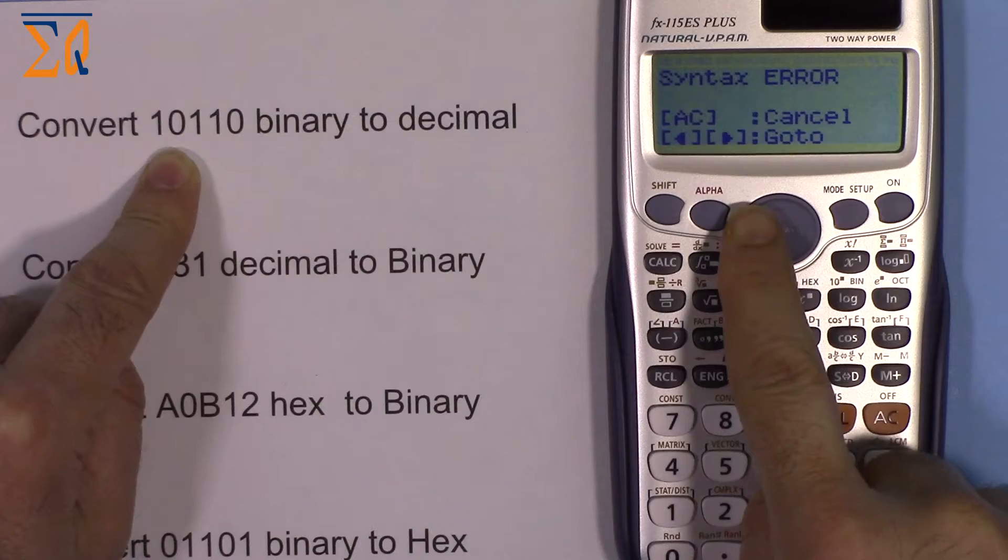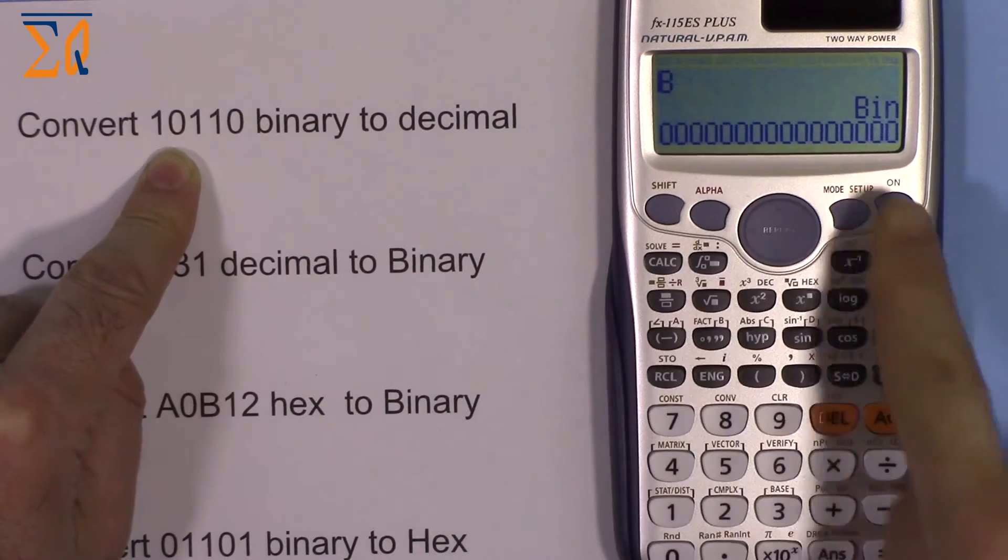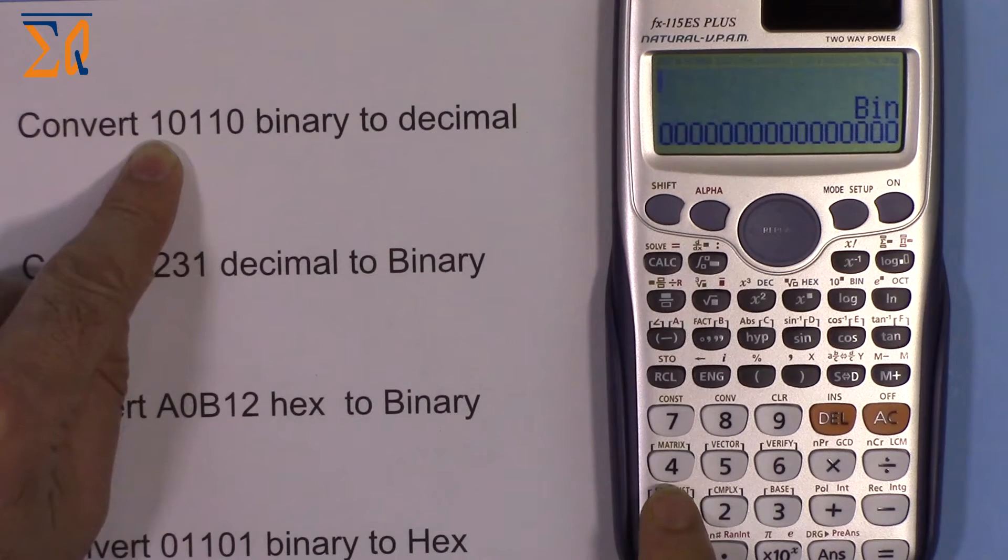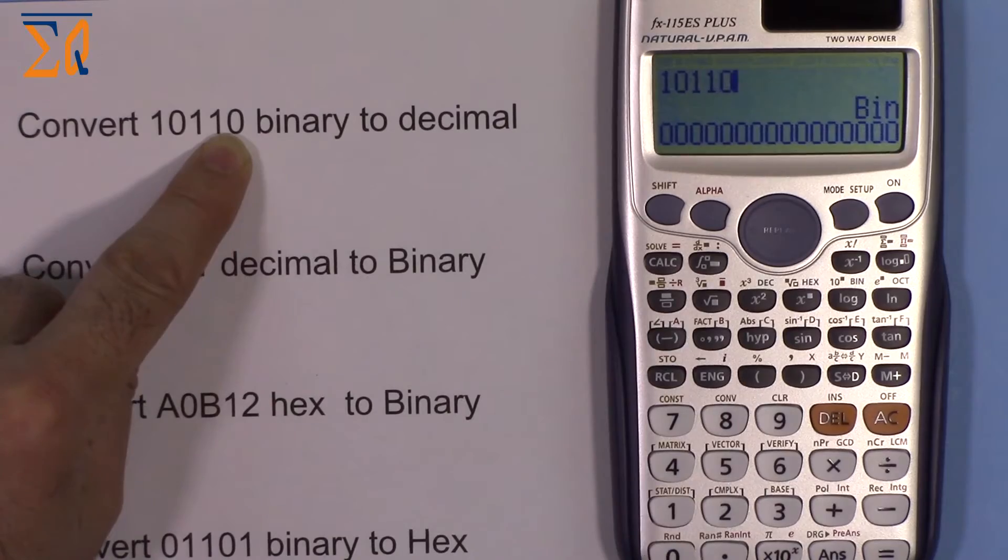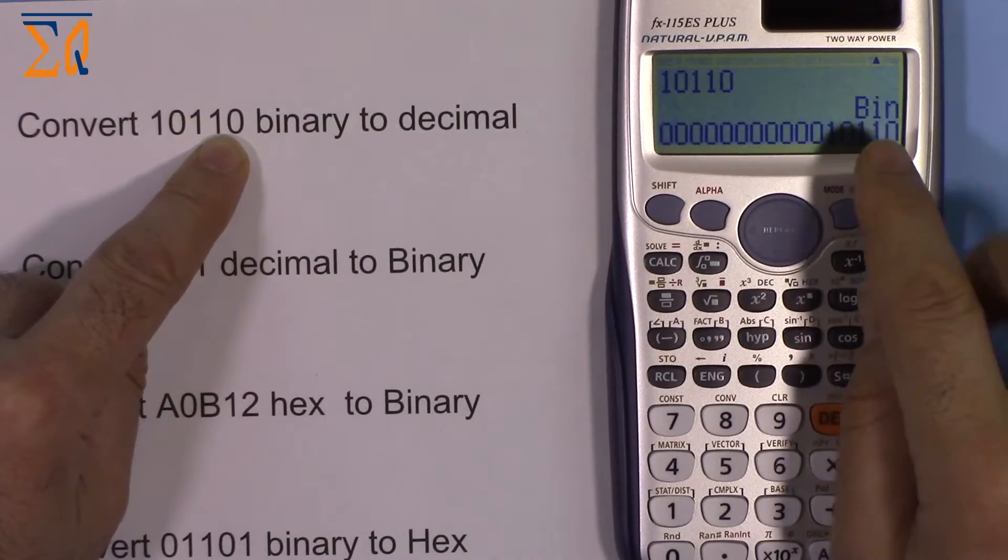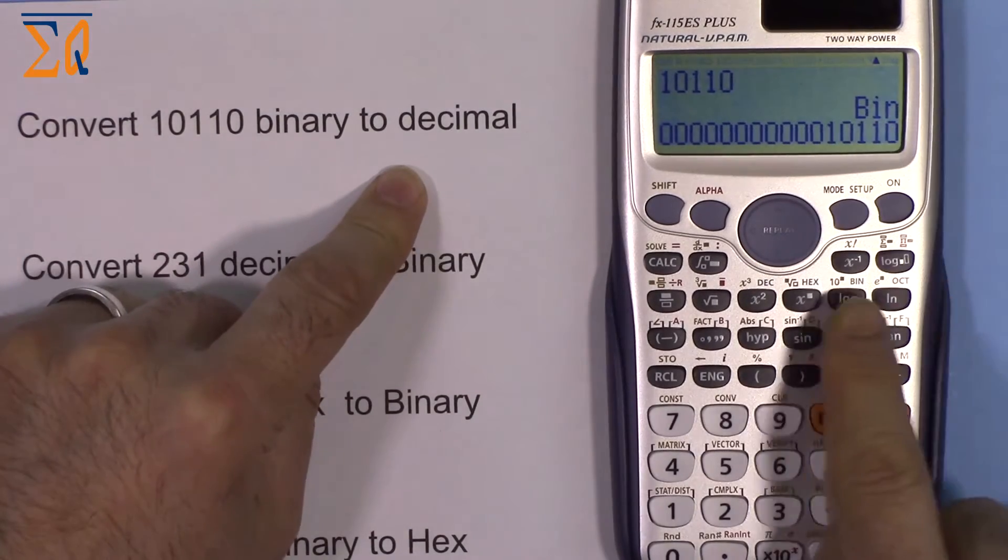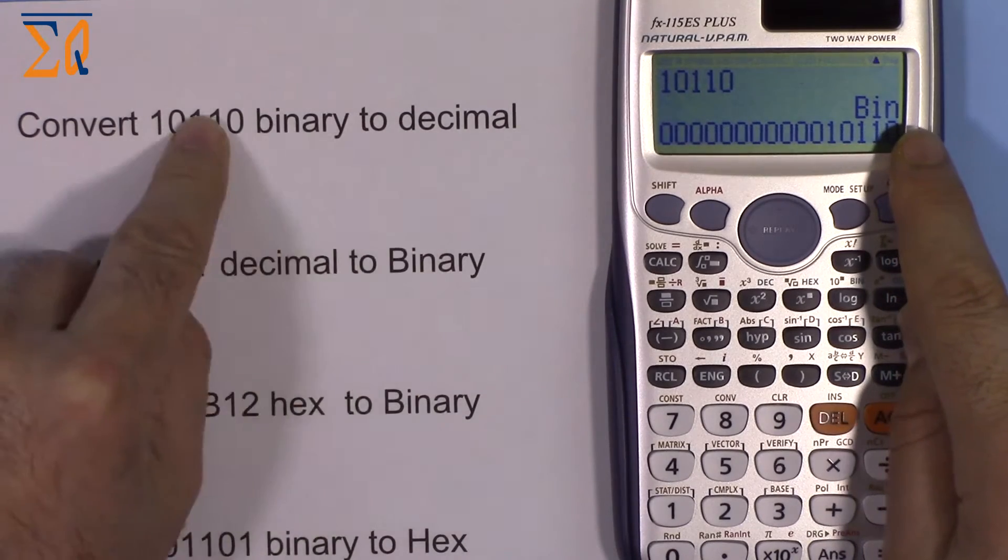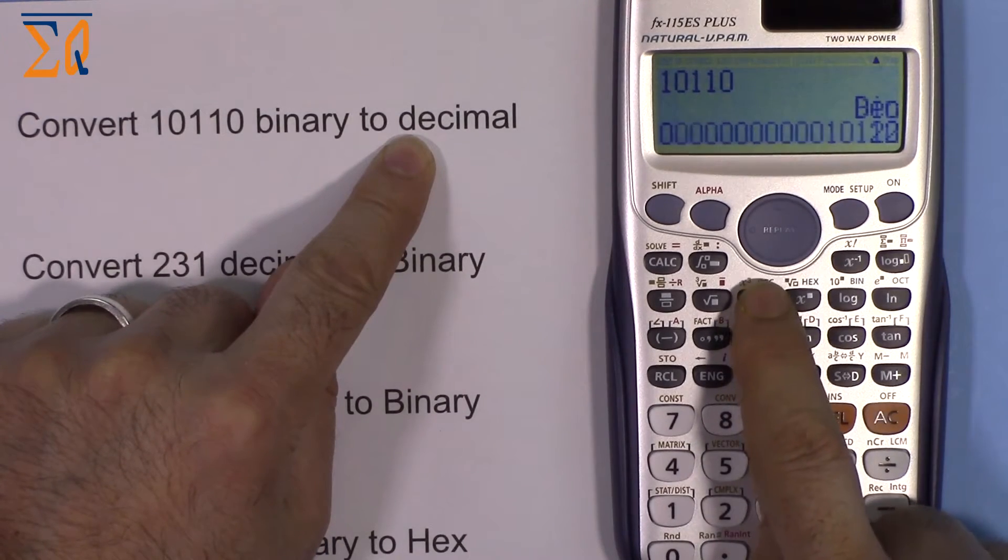If I press 8 or 9 I get an error. In binary mode press only 0 and 1. I'm entering 1, 0, 1, 1, 0. Once you enter all the values, press the equal sign to see the value. Now we can convert it to decimal by pressing the DEC button.